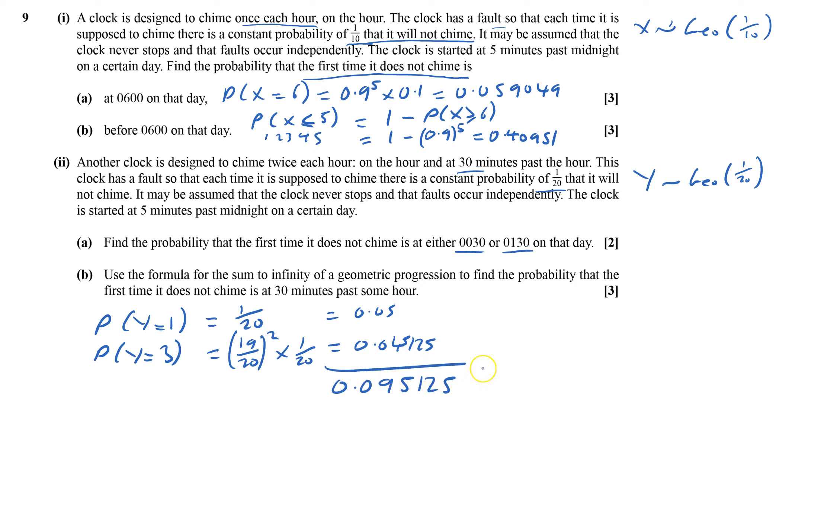Use the formula for the sum to infinity of a geometric progression. To find the probability it does not chime at 30 minutes past some hour, I've got 1 and 3.